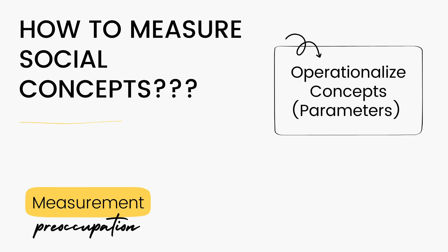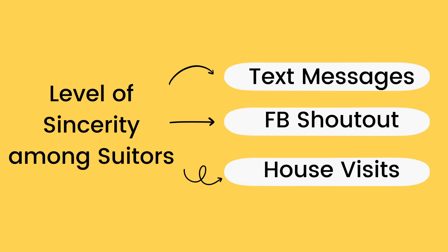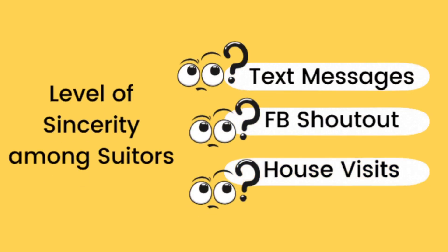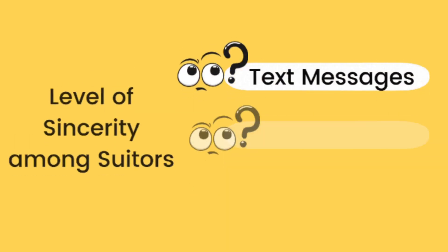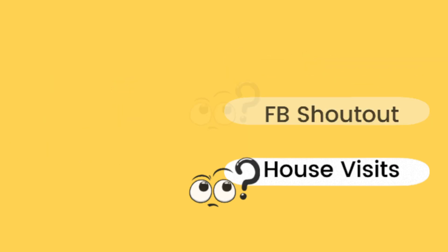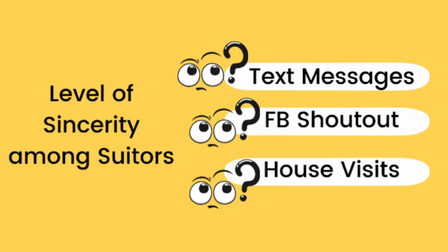How do we do this? We create parameters for each concept. For example, we want to know the level of sincerity of your suitor. What are the parameters for sincerity? The number of text messages he sent per day, the number of times he shouted you out on a Facebook post or stories per day, the number of times he visited your house, the number of times he sings for you. It is up to the researcher what parameters he or she will make under these concepts. Do you think text messages are enough measurement for sincerity? Do you think a Facebook shout-out is a good parameter? Do you think going to your house is a good measure for sincerity?